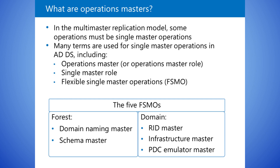Certain operations can be performed only by a specific role on a specific domain controller. A domain controller that holds one of these roles is an Operations Master, also known as a Flexible Single Master Operations role. Five Operations Master roles exist. You can locate all five on a single domain controller or spread them across several domain controllers. By default, the first domain controller installed in a forest contains all five roles.